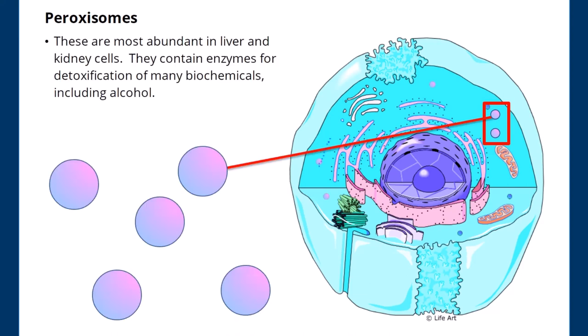Peroxisomes. These are most abundant in the liver and kidney cells. They contain enzymes for detoxification of many biochemicals, including alcohol.